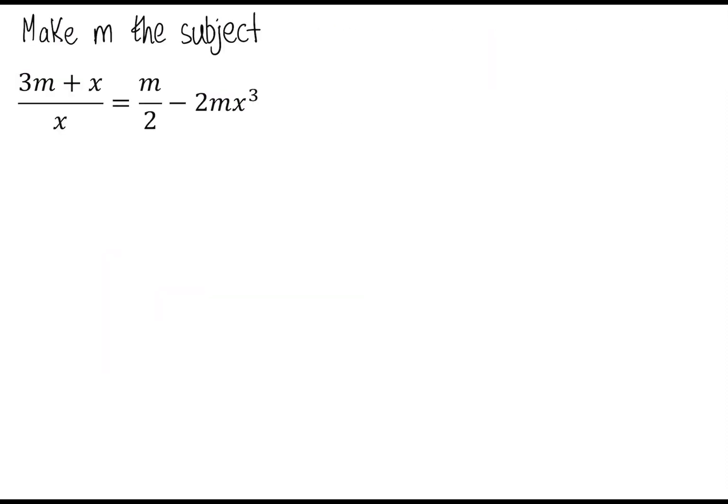Okay. In this question, we're asked to make m the subject of what looks like something very horrible. Now, my advice for these questions of making something the subject would be just to bring all the m's in this case to one side of the equation. Then we can see what we can do after that. Now on the right hand side, we have a fraction and a term. Let's just collect these terms together, put them in one fraction.